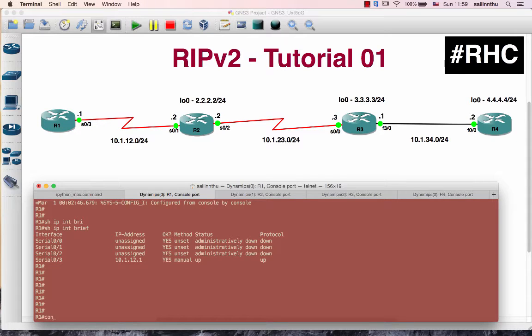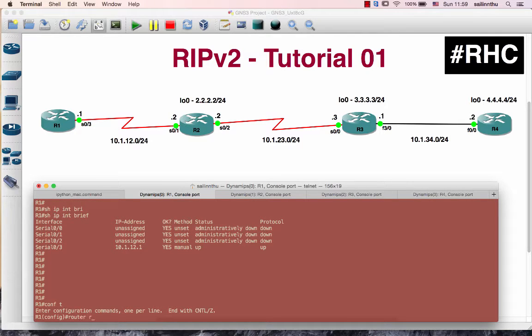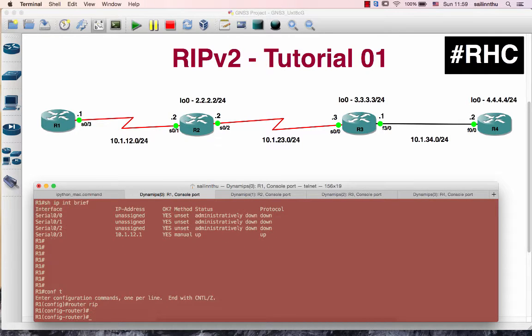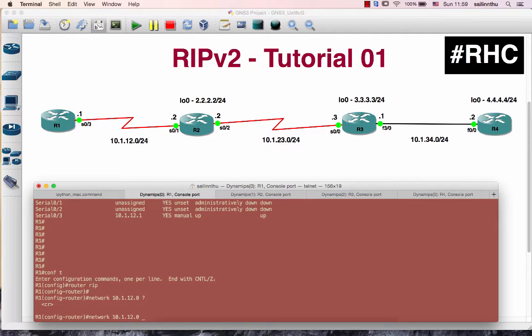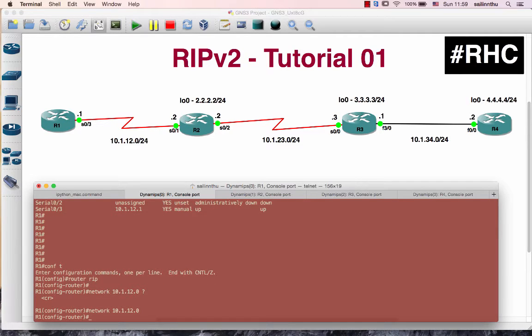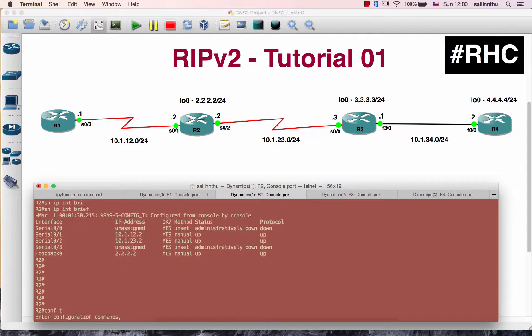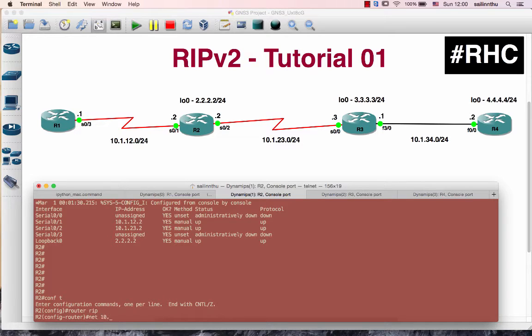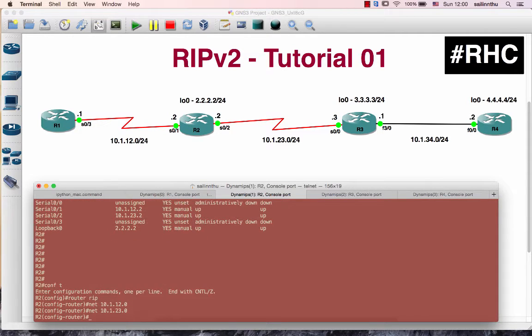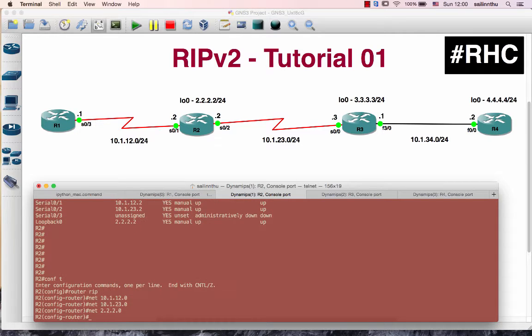Router RIP. Router 1 is connected to router 2. Network 10.1.12.0. Router 3 is connected, router RIP, network 10.1.12.0, network 10.1.23.0. That's it.